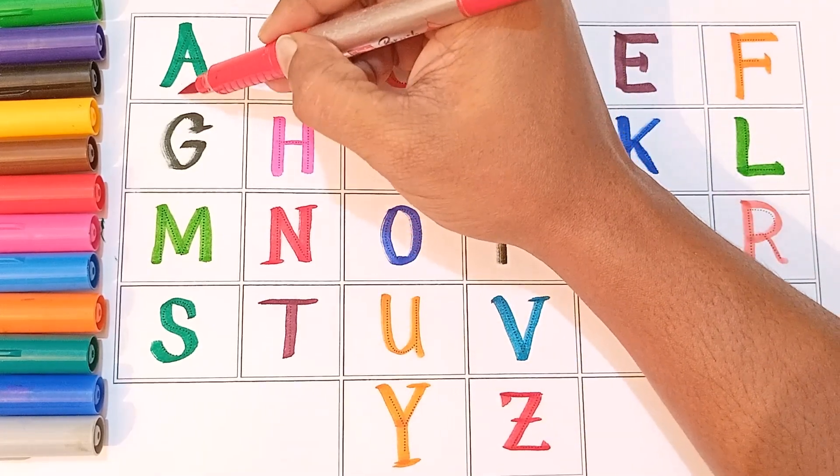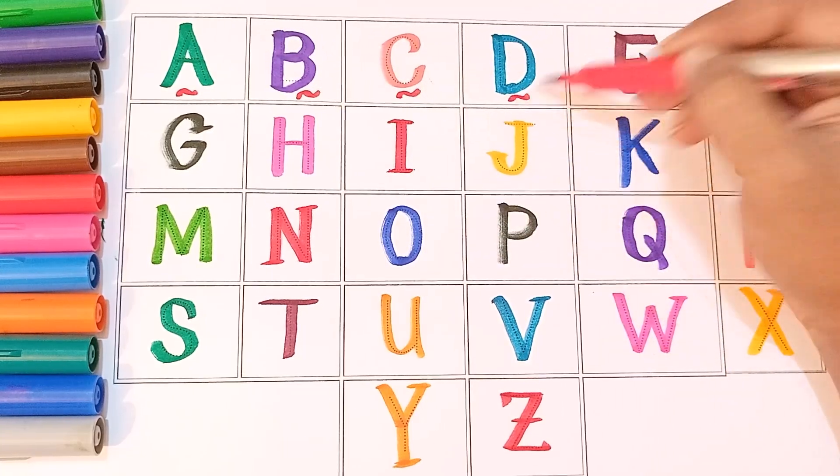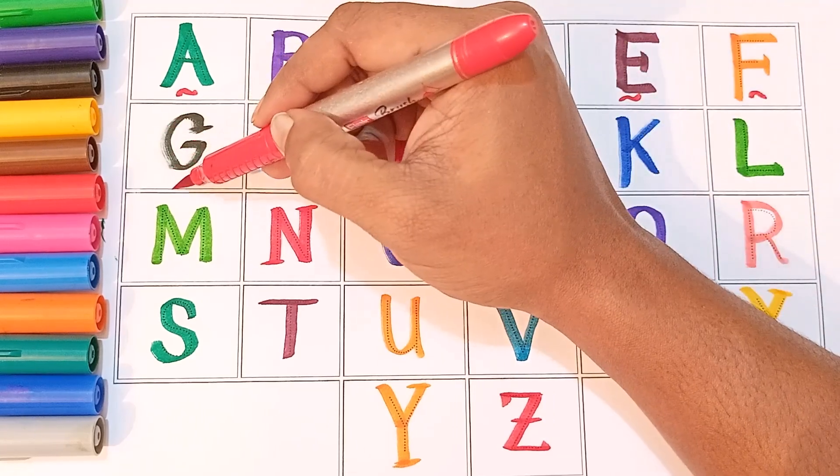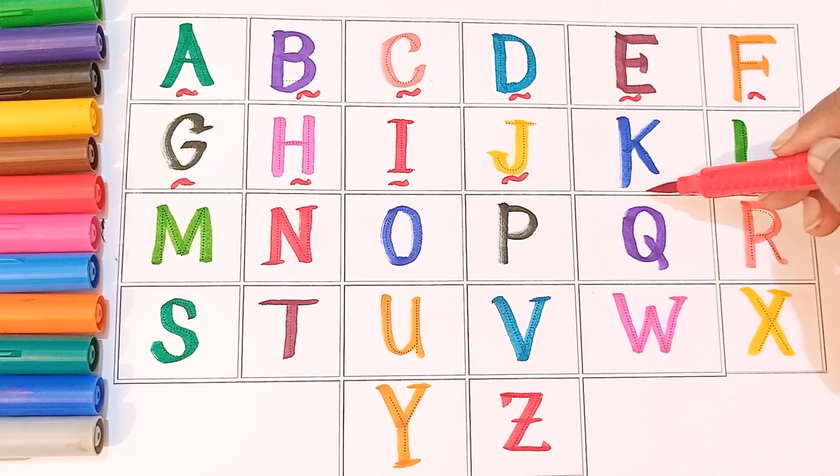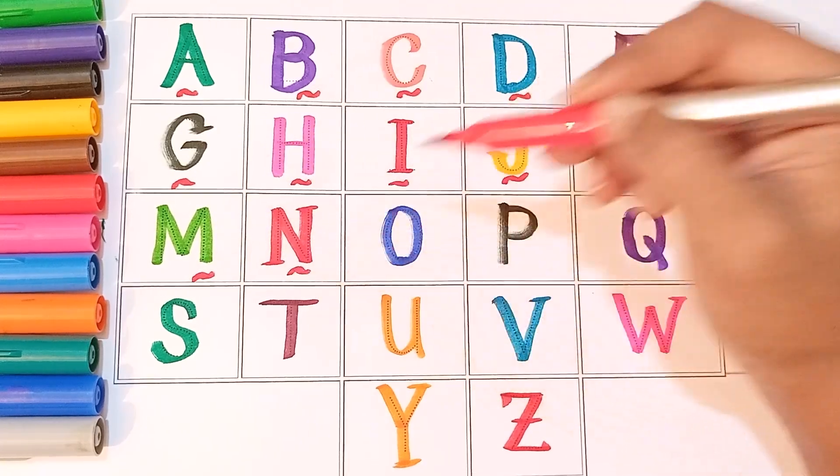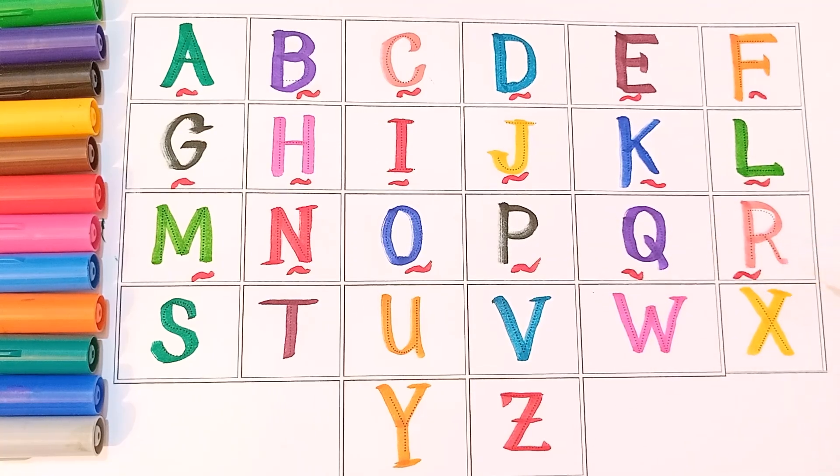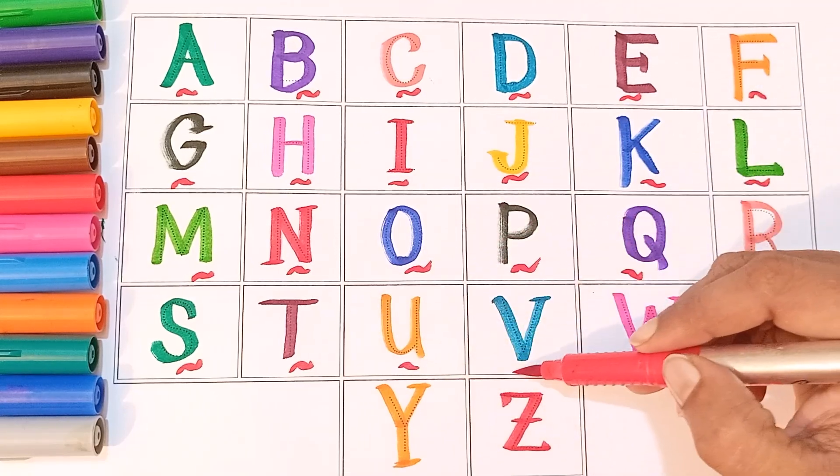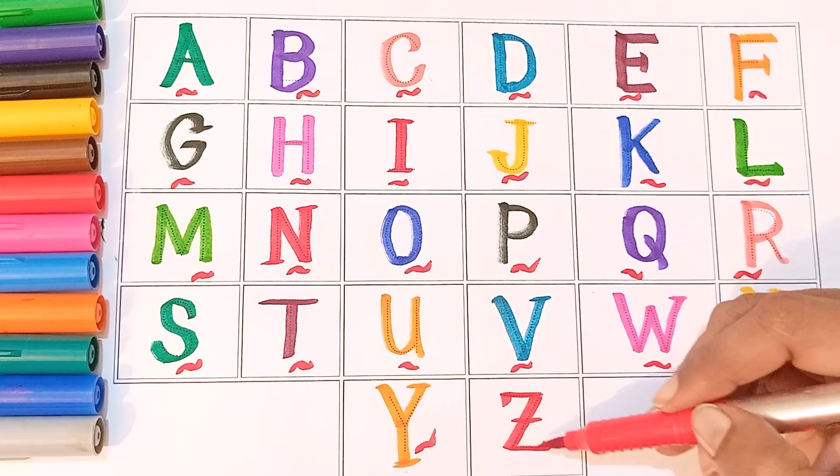Let's revise. A for apple, B for ball, C for cat, D for dog, E for elephant, F for fish, G for grapes, H for horse, I for ice cream, J for jackfruit, K for kangaroo, L for lion, M for mango, N for nest, O for orange, P for parrot, Q for queen, R for rat, S for sun, T for tiger, U for umbrella, V for vegetable, W for watch, X for x-ray, Y for yak, Z for zebra.